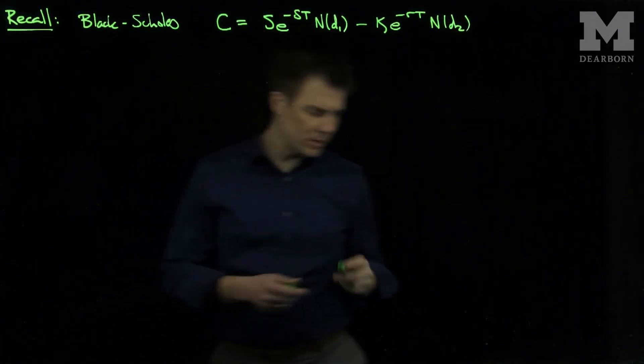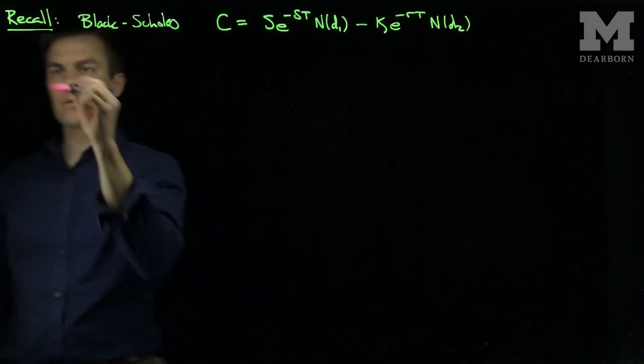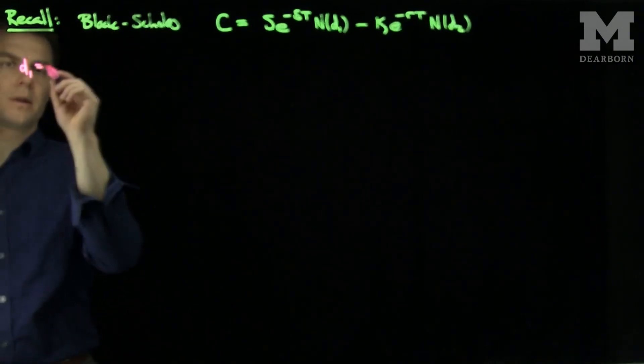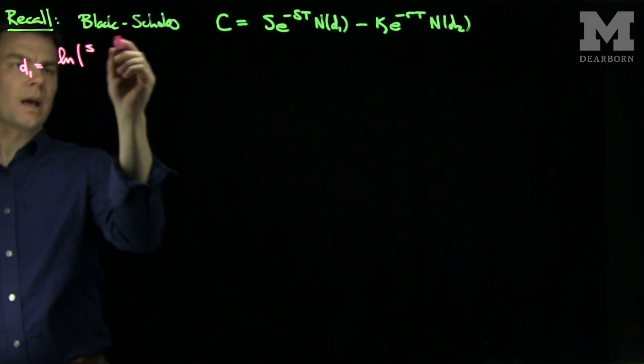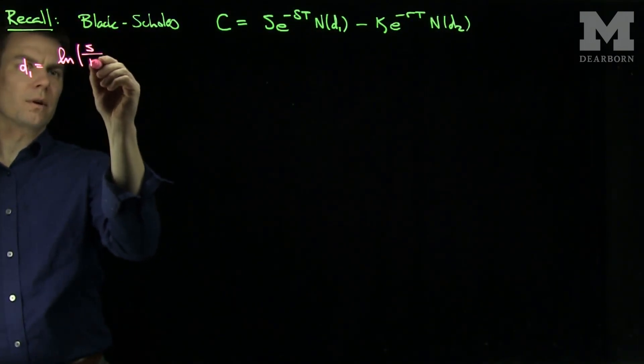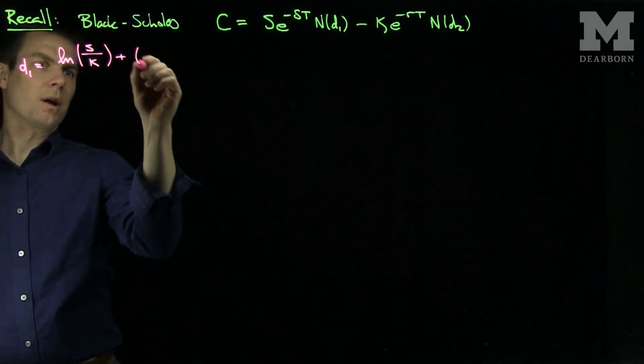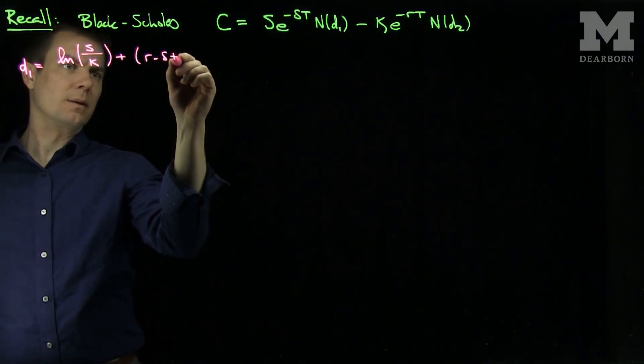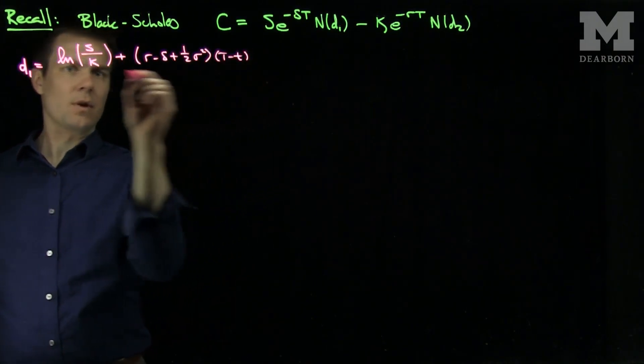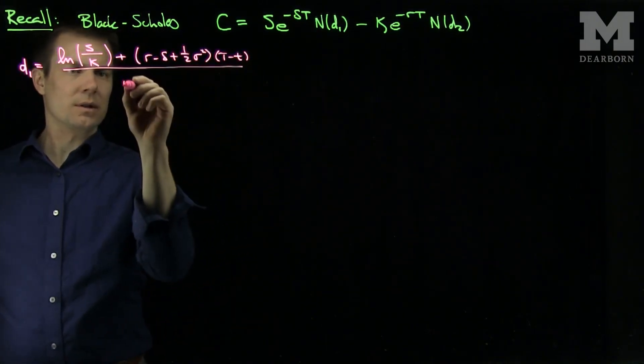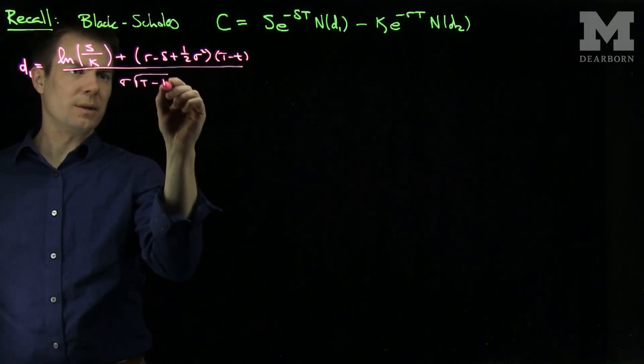Where we have our formulas for d1 and d2. So our formula for d1 is going to be the log of s over k plus r minus delta plus 1 half sigma squared t minus t over sigma square root t minus t.